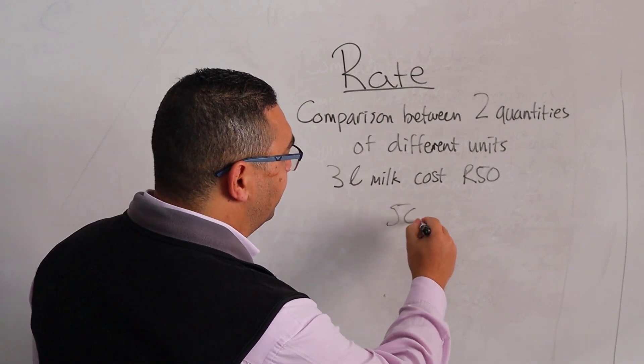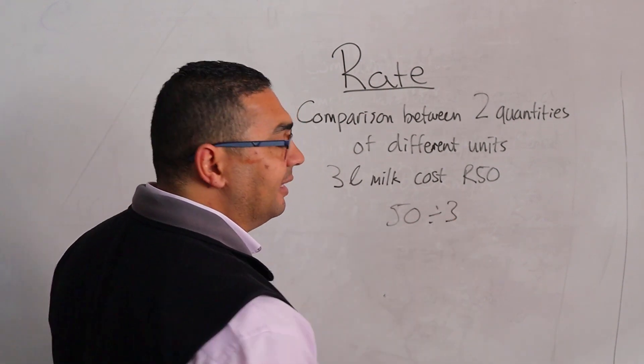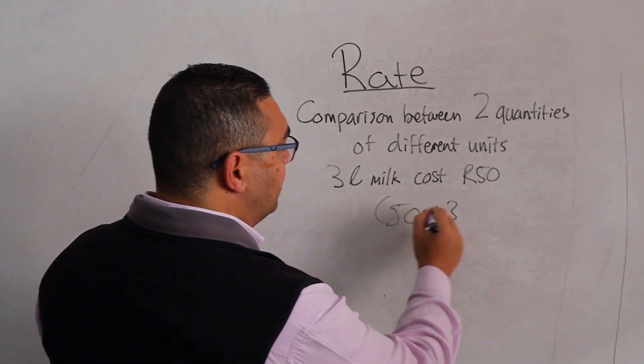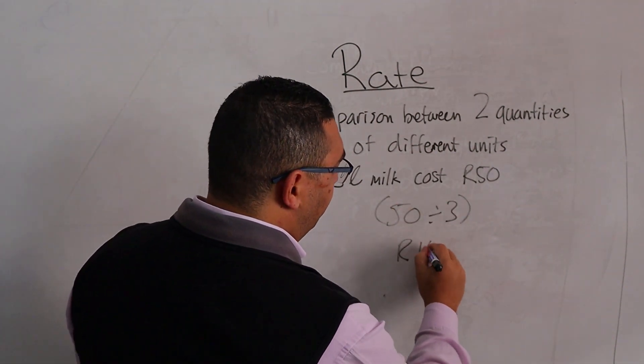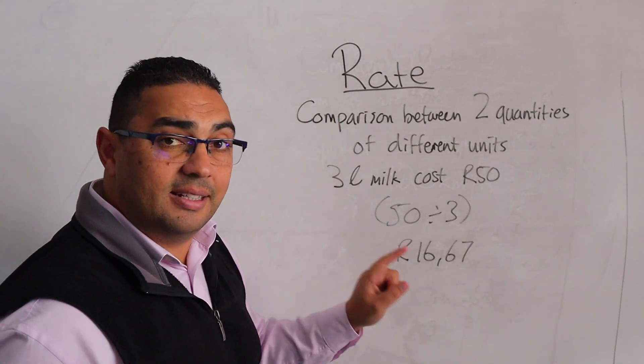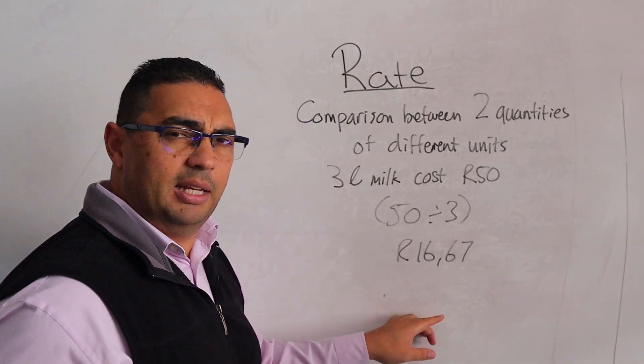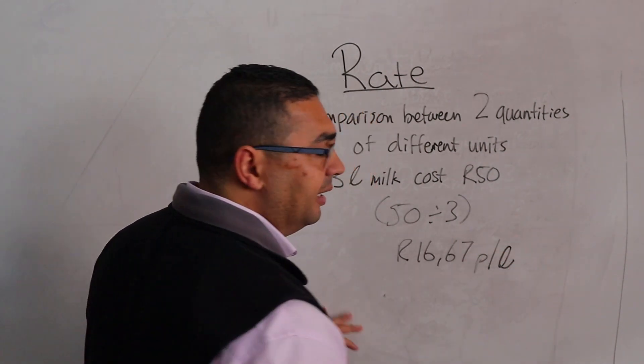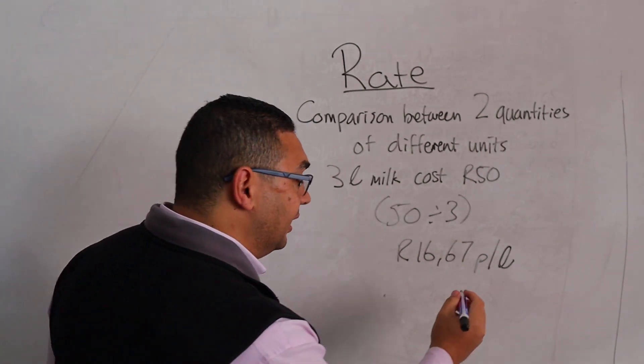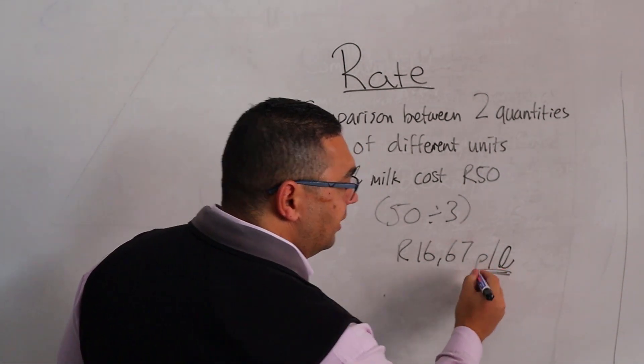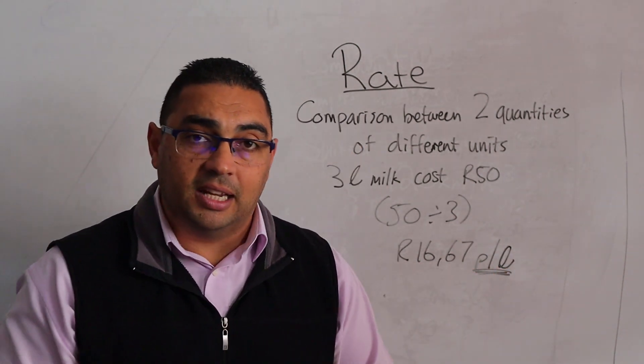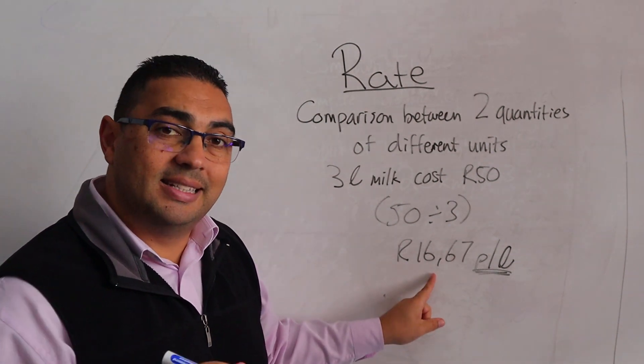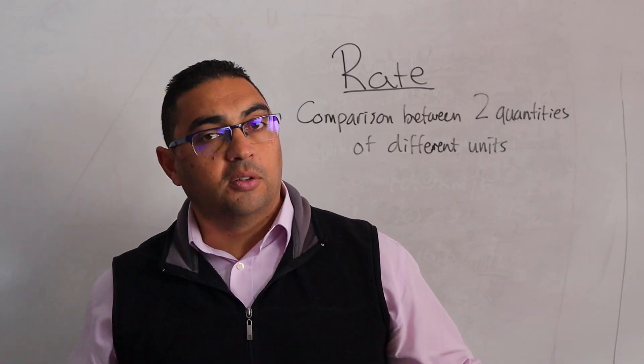I'm going to take my 50 and divide that by three. The answer is going to be 16 rand and 67 cents. But do I leave it like that? No, it's going to be per liter. This part - per liter - is my rate, because I'm saying for every liter of milk it's going to cost me 16 rand 67.